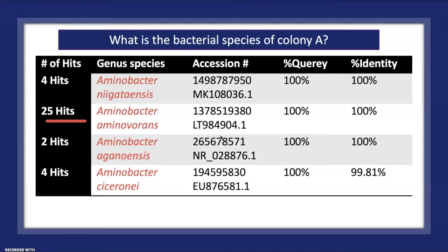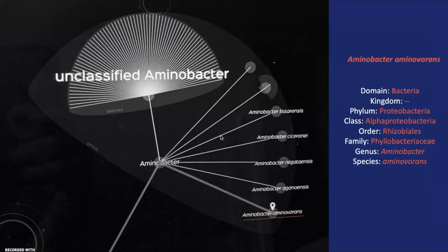I found that Aminobacter amnivoran is classified in the domain Bacteria, kingdom unspecified, phylum Proteobacteria, class Alphaproteobacteria, order Rhizobiales, family Phyllobacteriaceae, genus Aminobacter, and species amnivoran. I also found a map online showing known Aminobacter species, and four of them are the ones that showed up in my BLAST search — the rest are unclassified.